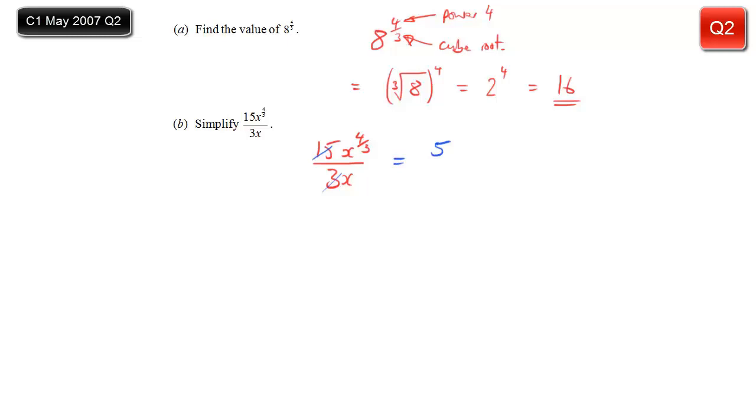And next I need to consider x to the power of 4 thirds divided by x. You could write this as an intermediate step. I'm just going to do my working at the side. x to the power of 4 thirds, if you divide by x, you're dividing, don't forget, by x to the power 1. And when you divide, you subtract the powers. So it's x to the power 4 thirds minus 1, which is of course 1 third. So x to the power 1 third goes into there, and my answer is 5x to the power 1 third. And that's the simplest form.